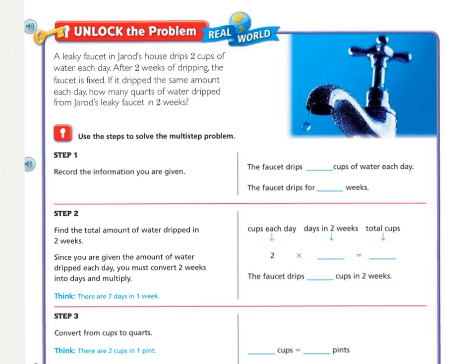Unlock the problem. A leaky faucet in Jared's house drips two cups of water each day. After two weeks of dripping, the faucet is fixed. If it dripped the same amount each day, how many quarts of water dripped from Jared's leaky faucet in two weeks?